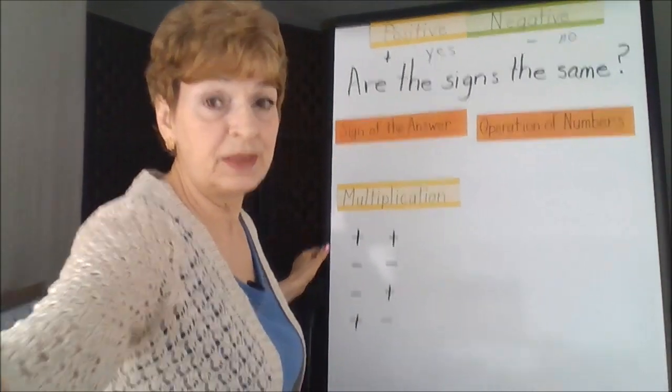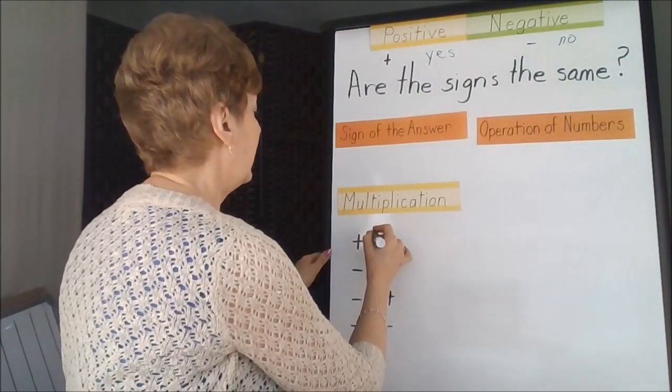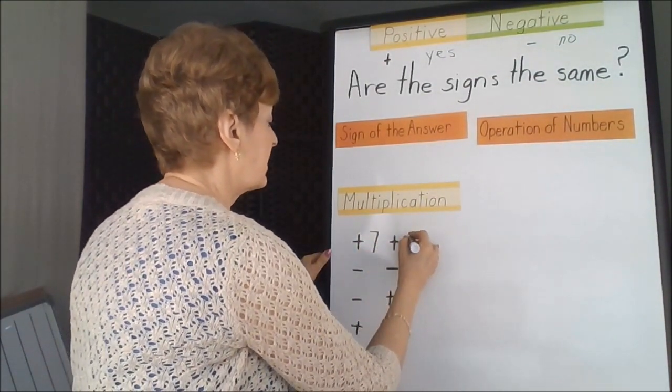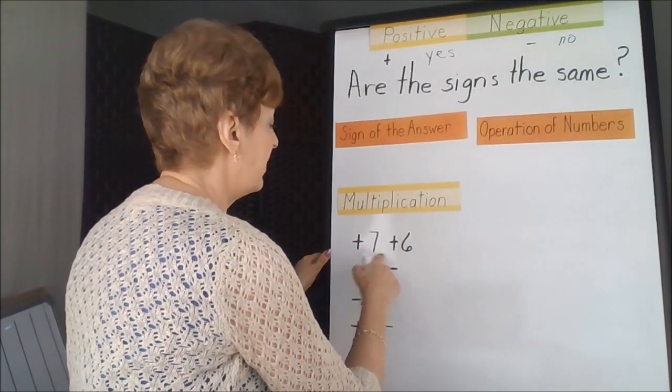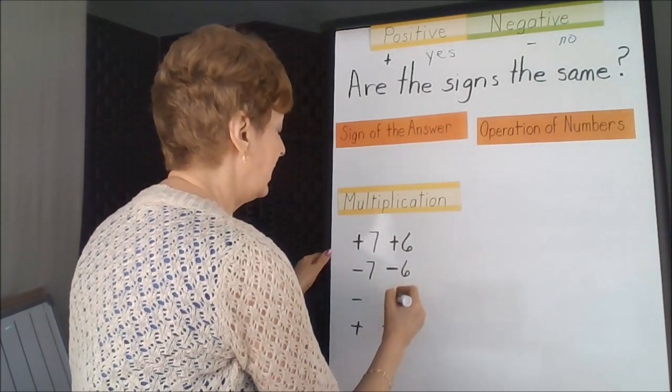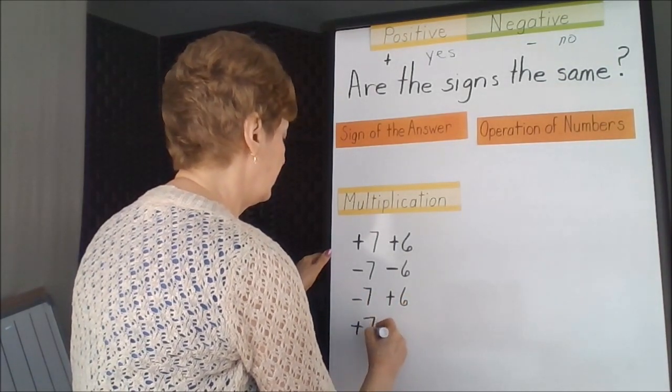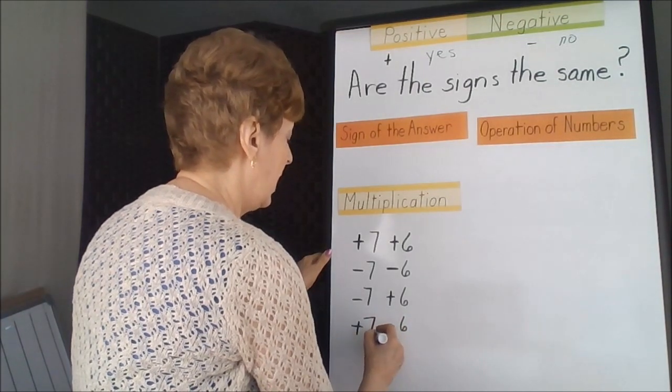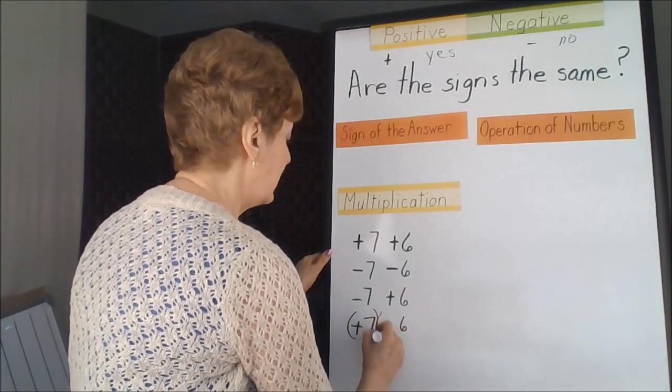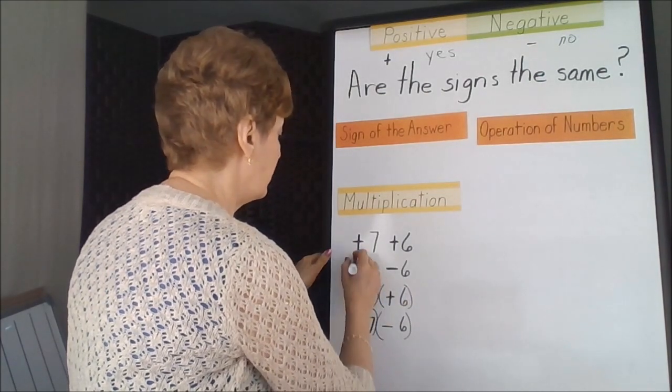Let me put some numbers with it and it'll make more sense. Let's say we had seven and six, a positive seven, a positive six, or a negative seven and a negative six, or a negative seven and a positive six, or the other way around. We would be multiplying these together. Let's get a symbol for multiplication. I'll use the parentheses.